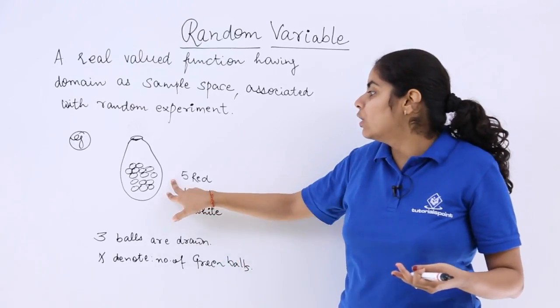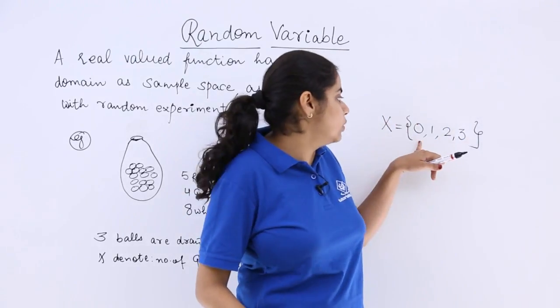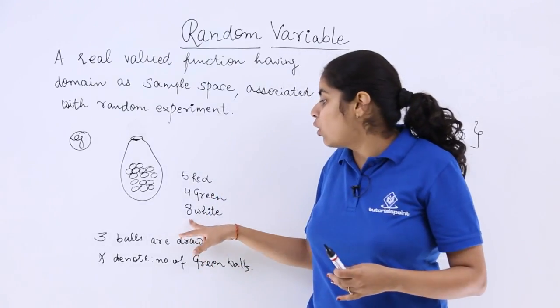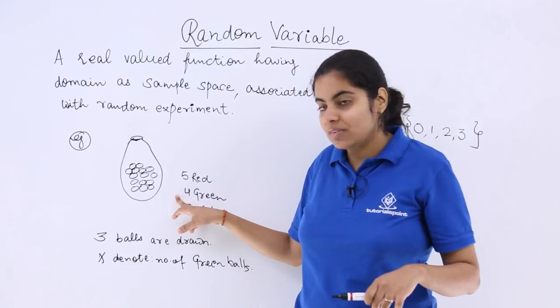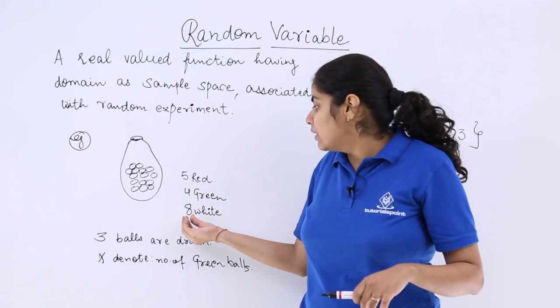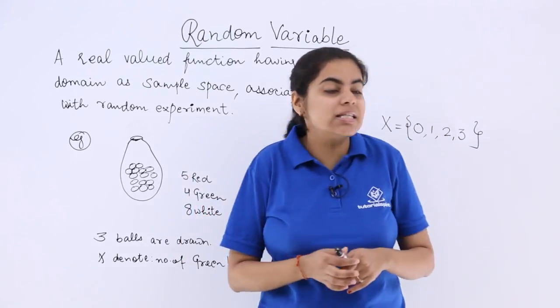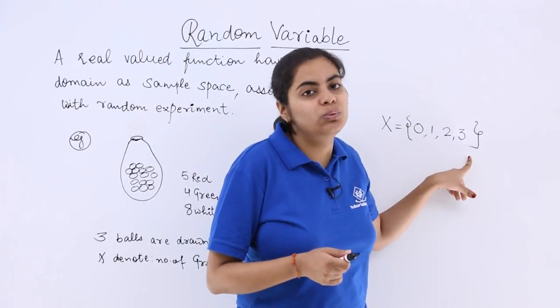Now it can be that you take out all 3 from red so then it would be 0. Similarly if you take out all 3 from white it would be 0. If you take out 1 green and then you say that rest you take out from other places so only 1 green. Similarly 2 and 3.